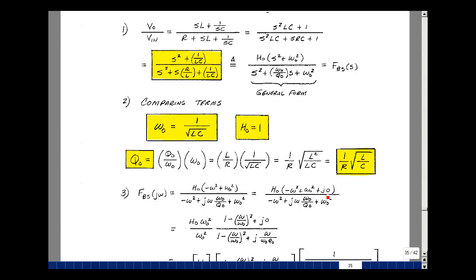So let me write the imaginary term as J0. Now let's pull out some terms and see if we can get this to look like our forms 7 and 8. Pull out H naught and omega naught squared, left with a 1, and then a minus omega squared over omega naught squared plus J0. In the denominator, I'm going to pull out an omega naught squared. I'm left with a 1 minus omega squared over omega naught squared. And then J omega divided by omega naught squared cancels this omega naught. So we just have an omega naught to the first power and Q naught in the denominator.